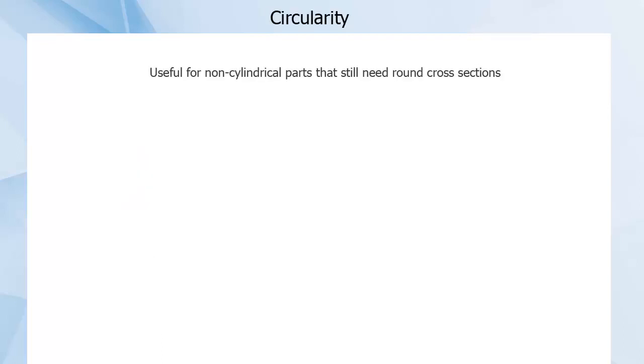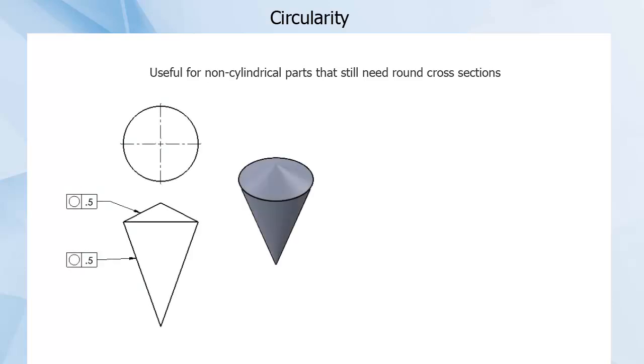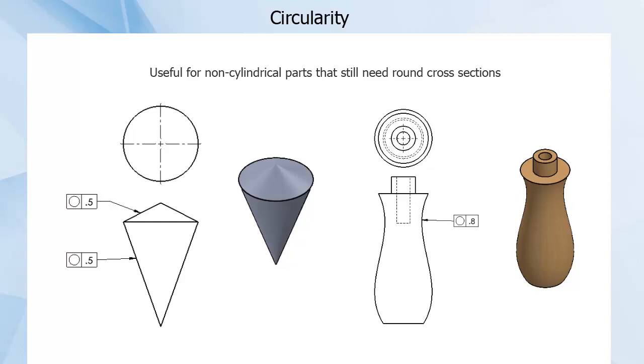Circularity can be useful for non-cylindrical parts that still need to be round. A cone or a handle for a garden tool would each have a series of cross-sections that need to be round, but not necessarily the same size. A special use of circularity is calling out the circularity of a sphere, such as a ball bearing.